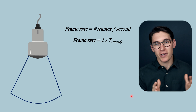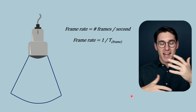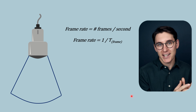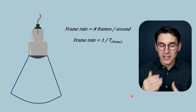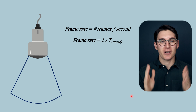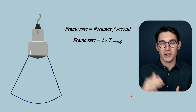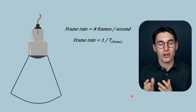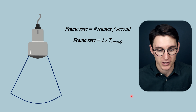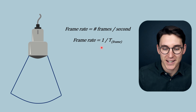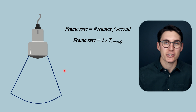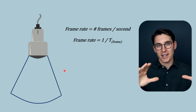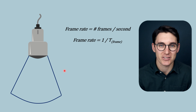In most videos we watch, anything above 24 frames per second is perceived as smooth movement. This concept applies in ultrasound imaging. Our frame rate is synonymous with our temporal resolution — the speed at which we can display frames on our ultrasound image determines how much motion we can detect. The frame rate is determined by the number of frames per second of image acquisition, or equivalently, one second divided by the time it takes to acquire one single frame.